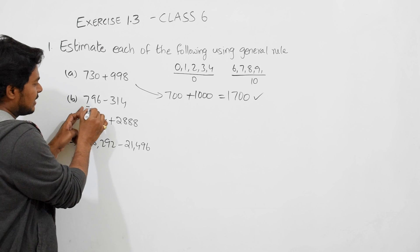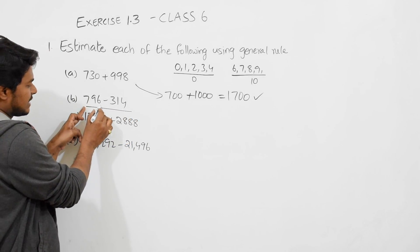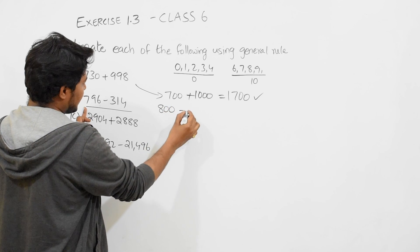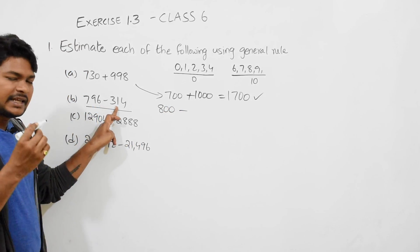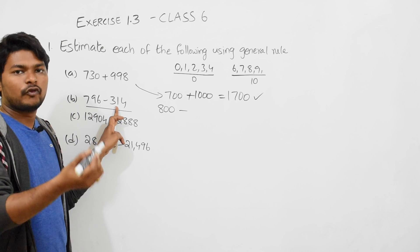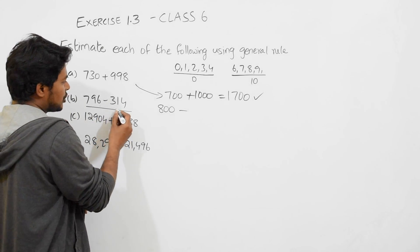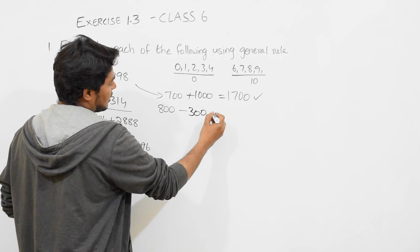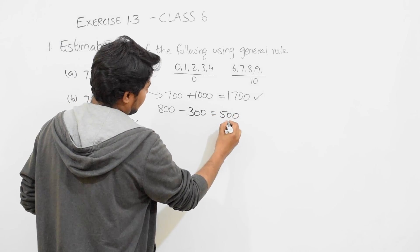The second question: 796 is nearer to 800, minus 314 is nearer to 300 but very far from 400. So you estimate to 300. 800 minus 300 will be 500, this will be the value.